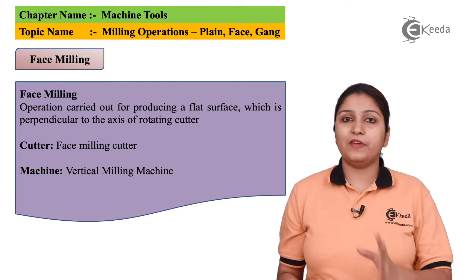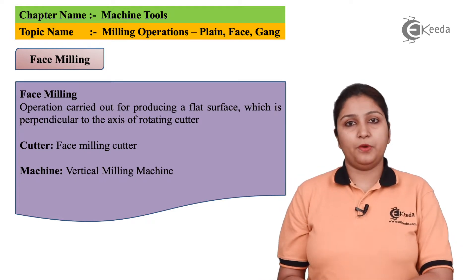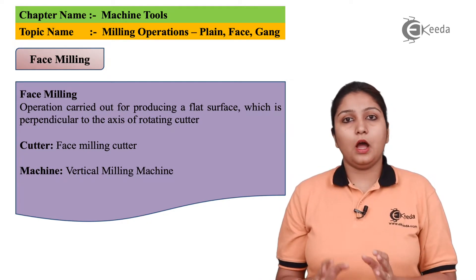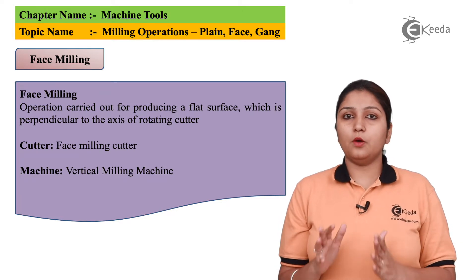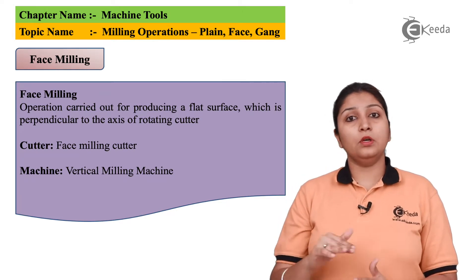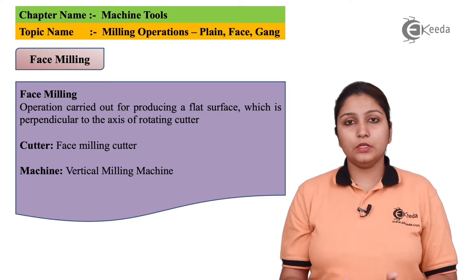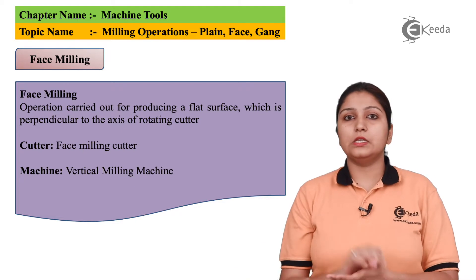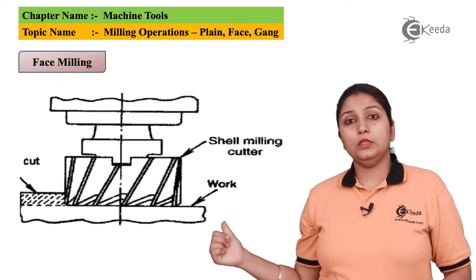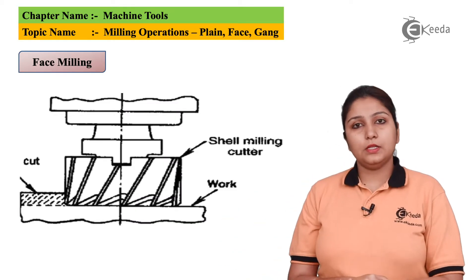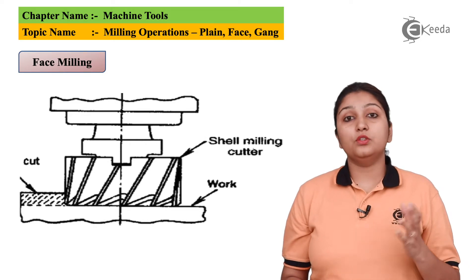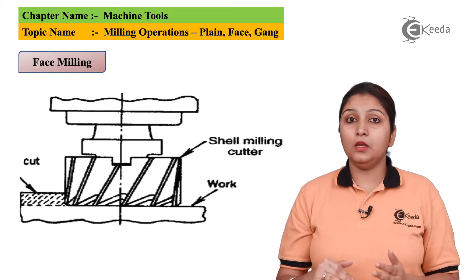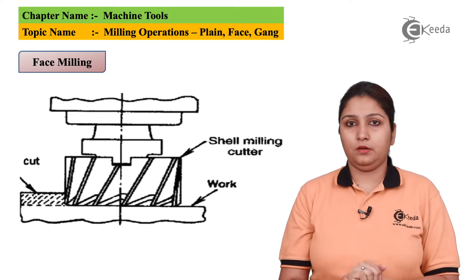The next operation is face milling operation, which is strictly used to mill only the faces. The face milling operation is carried out only on the upper surface. In this diagram we can see there is a face milling cutter which is used to mill the upper surface of any plane.